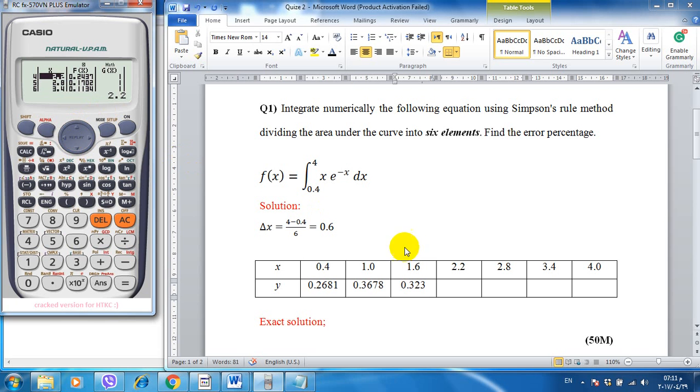And then go down. At 2.2 equal to 0.2437, and at 2.8, 0.1702. At 3.4 is 0.1134, and at number four we have 0.0732. This directly we got here.